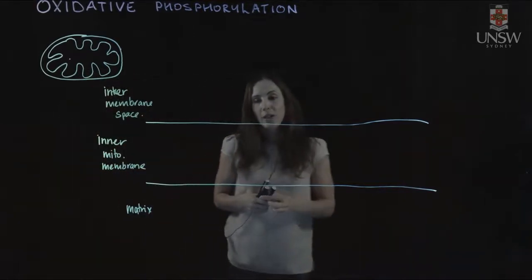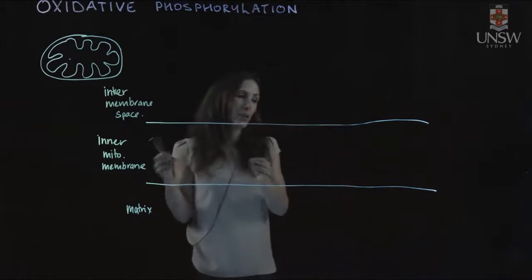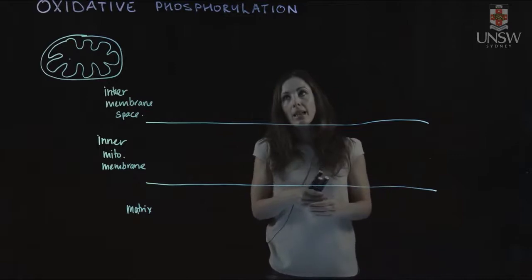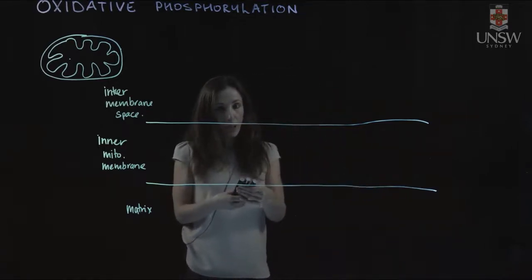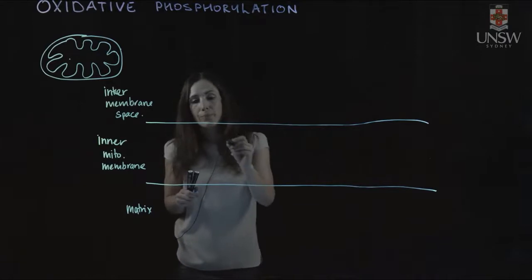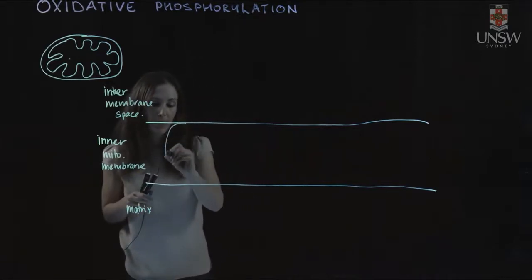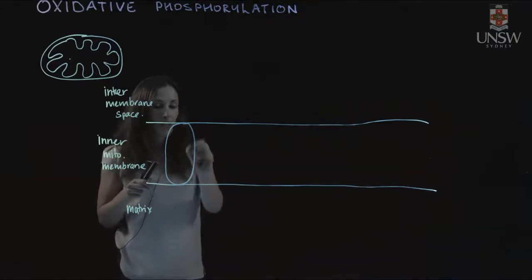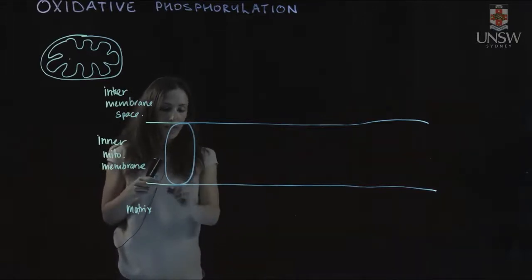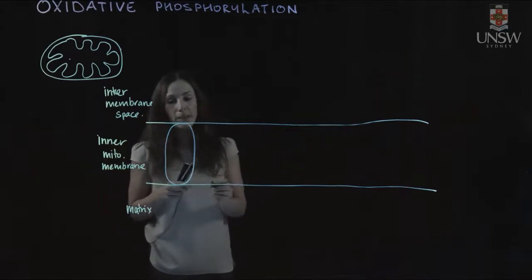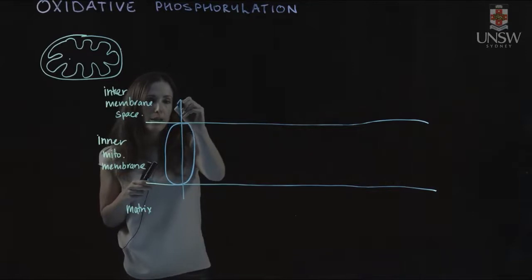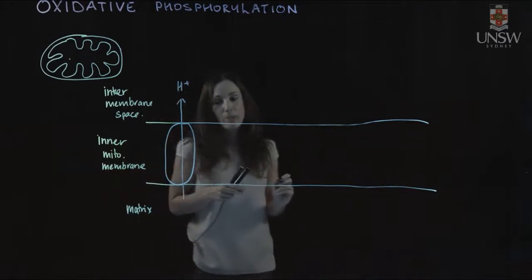Oxidative phosphorylation has two parts: the electron transport chain and ATP synthase. These processes are coupled together. The electron transport chain is comprised of four complexes. Complex I has a portion that extends outside the membrane and transports protons from the matrix into the intermembrane space.